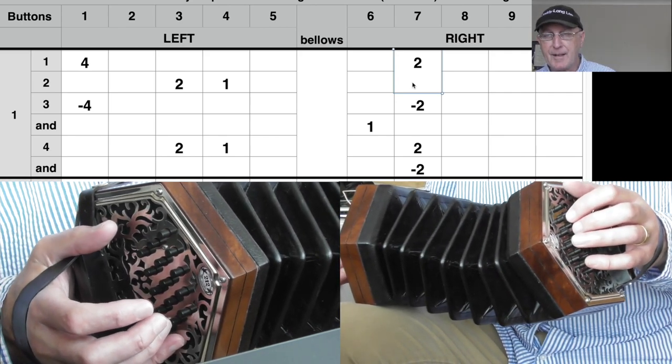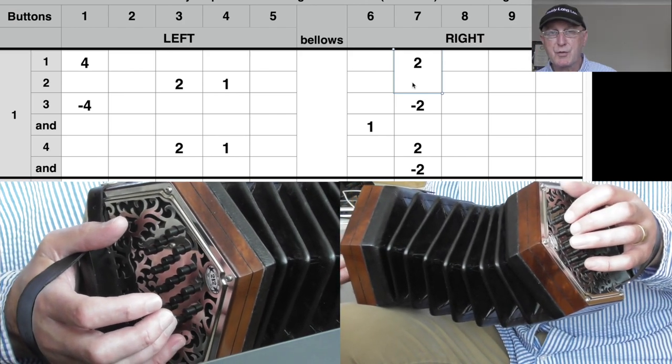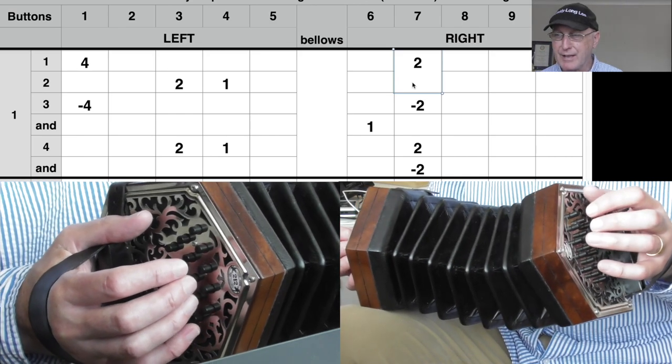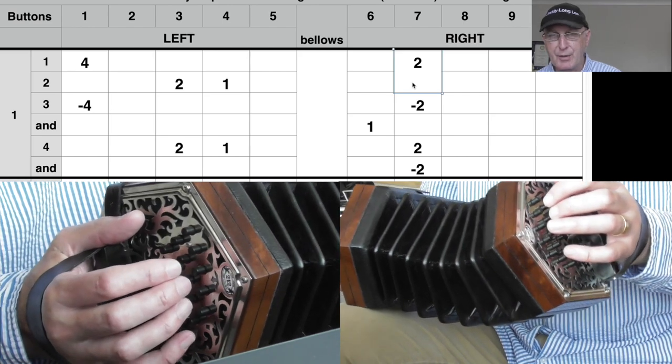So put that together. So the bass line falls on one, two, three, four and the right hand you count it one, two, three and four and. Let's put that all together now.